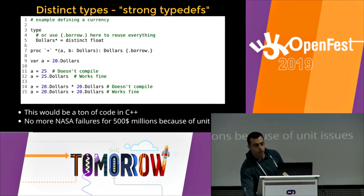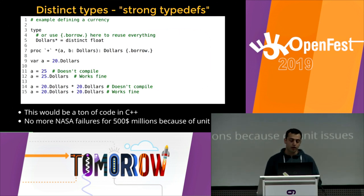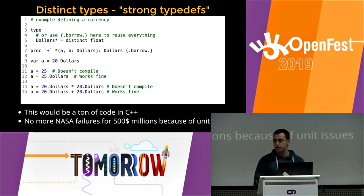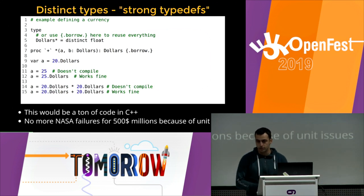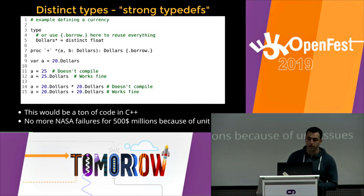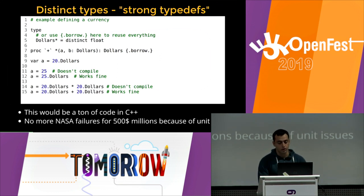Let's go through some selected features that are really hard to achieve in other languages but come basically for free in NIM. For example, distinct types: if you want a units library or currency, in NIM you can say that dollars is a distinct float. It's a float underneath, but a distinct type. You can borrow operators with a single line and get type safety when dealing with currencies — something that requires hundreds or thousands of lines of code and templates in C++.